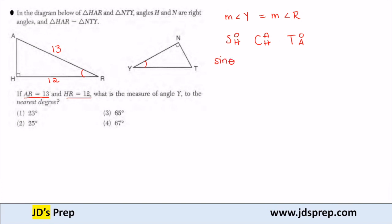Sine of an angle is the opposite side over the hypotenuse. Cosine of an angle is the adjacent side over the hypotenuse. And tangent of an angle is opposite over adjacent.